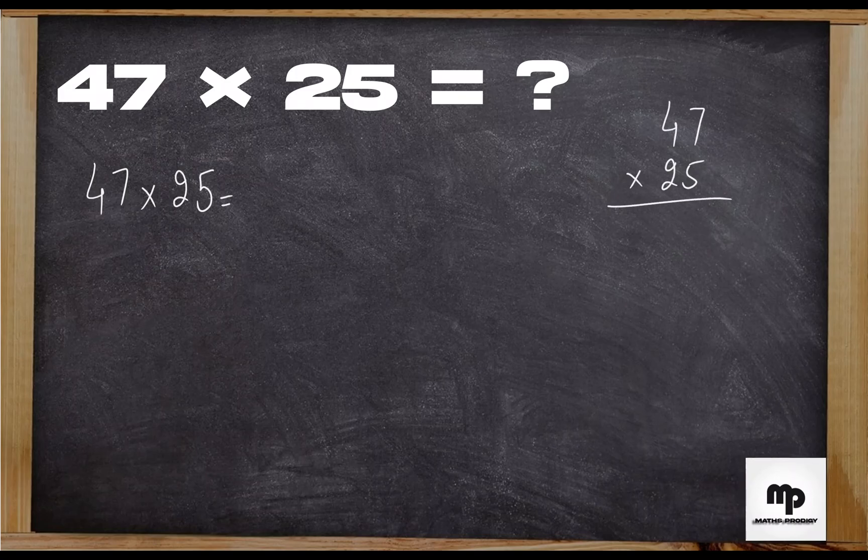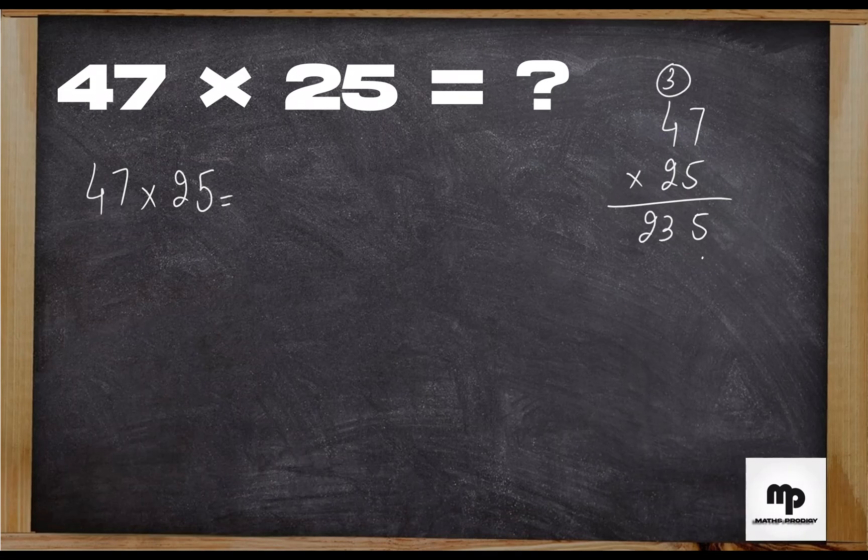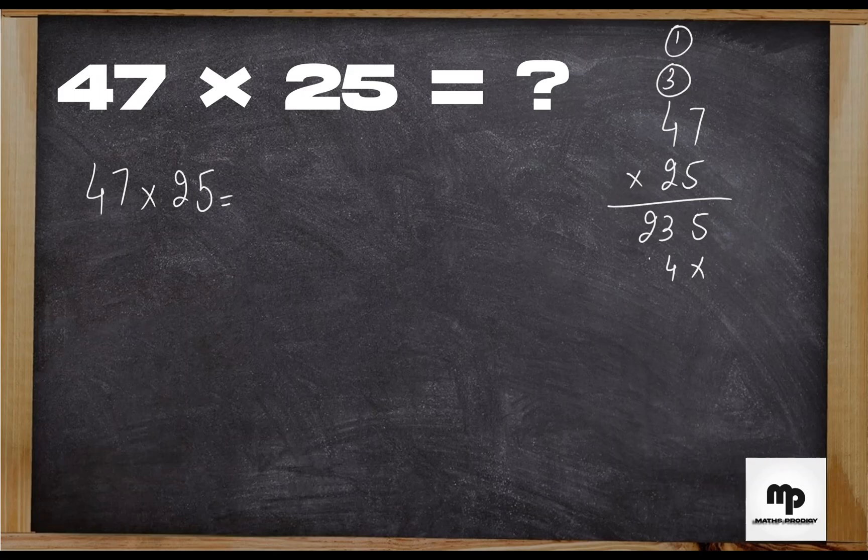Simply you will do 5 times 7 equals 35, then 2 times 3, then 1 times 4 carry, and then it is 9. The answer is 1,175.